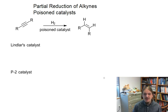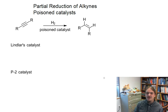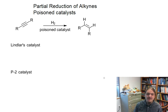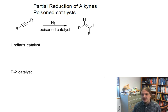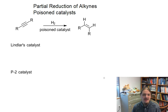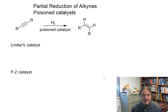Hello, in this video I'm going to go into a little bit more detail about the partial reduction of alkynes by poison catalysts. I'm going to share some examples of commonly used poison catalysts and give a short explanation of what's going on so that this reaction stops at the alkene instead of going on to the alkane.